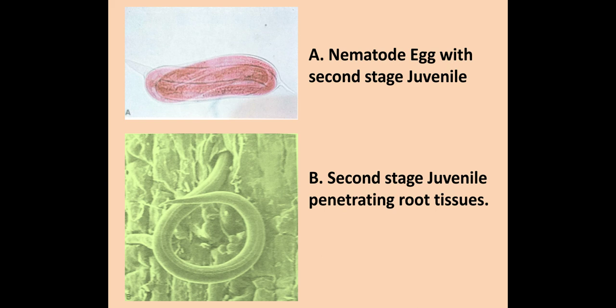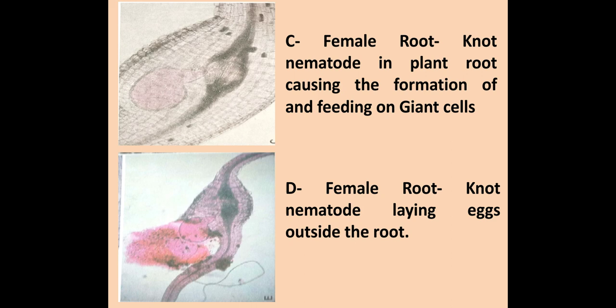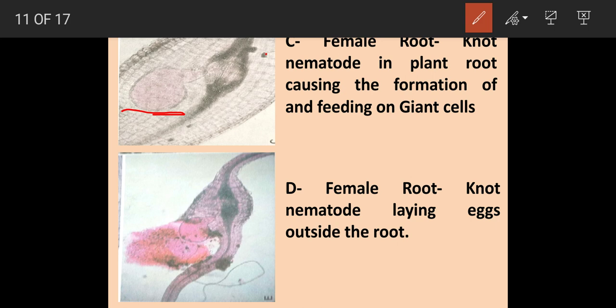The second juvenile stage starts penetrating the root tissues. Female root nematodes in the plant root cause the formation of giant cells. This is the female root nematode and these are the giant cells. The female root nematode lays eggs outside the root — these are the eggs present inside the gelatinous disc.